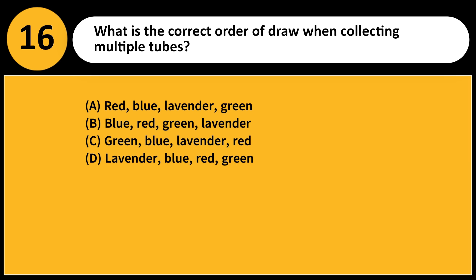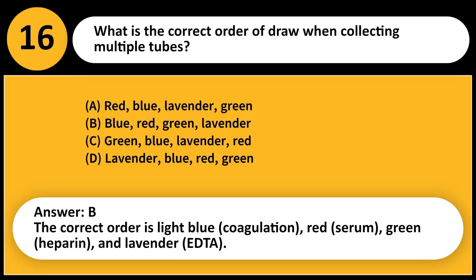What is the correct order of draw when collecting multiple tubes? A. Red, blue, lavender, green. B. Blue, red, green, lavender. C. Green, blue, lavender, red. D. Lavender, blue, red, green. Answer: B. The correct order is light blue (coagulation), red (serum), green (heparin), and lavender (EDTA).